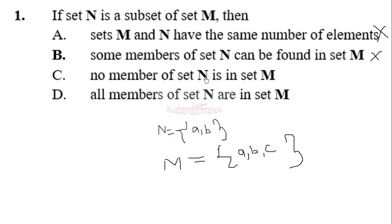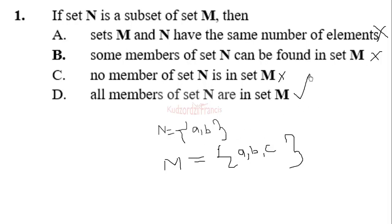No member of set N is in set M — that one too is not true, because we can see a and b in N and they are in M. All members of set N are in set M — that is true, because a and b are all found in set M. So if N is a subset of M, then the correct answer is that all members of set N are in set M.